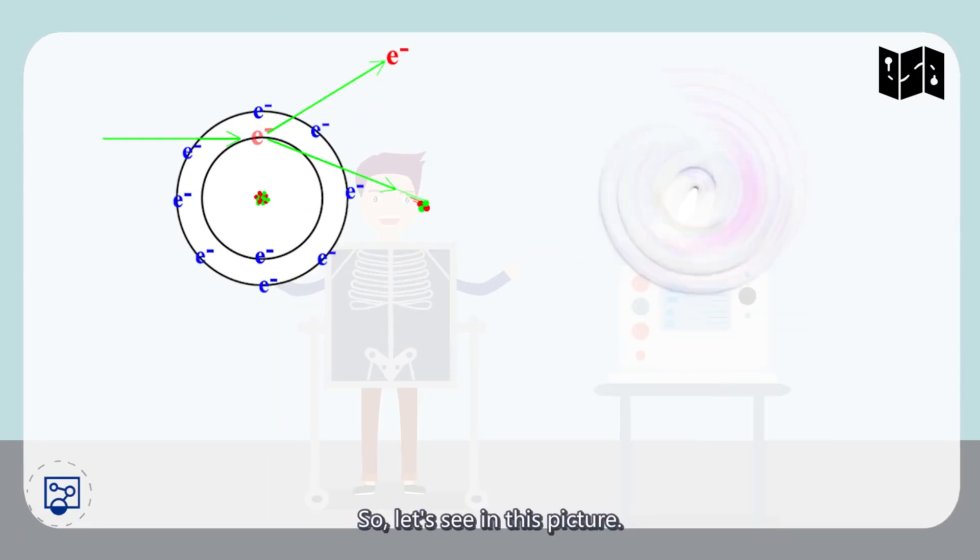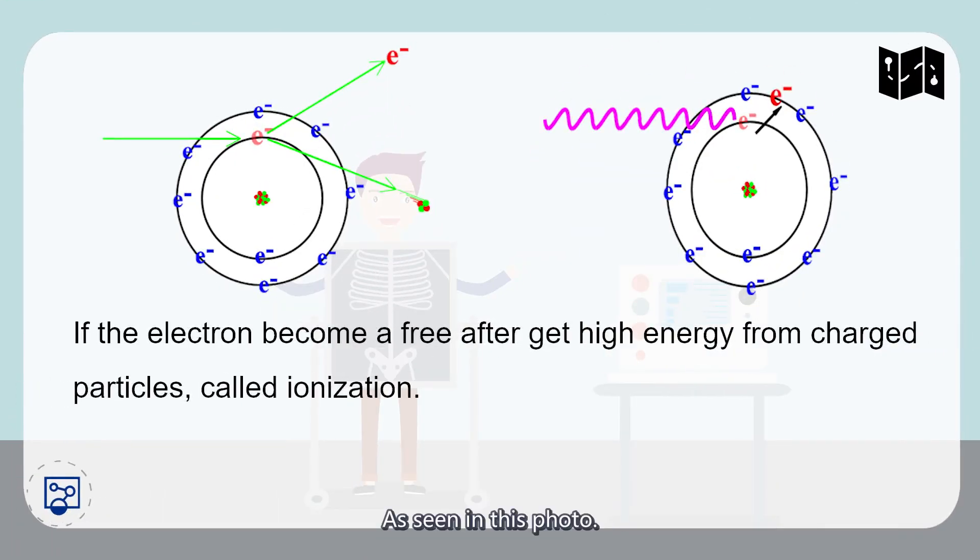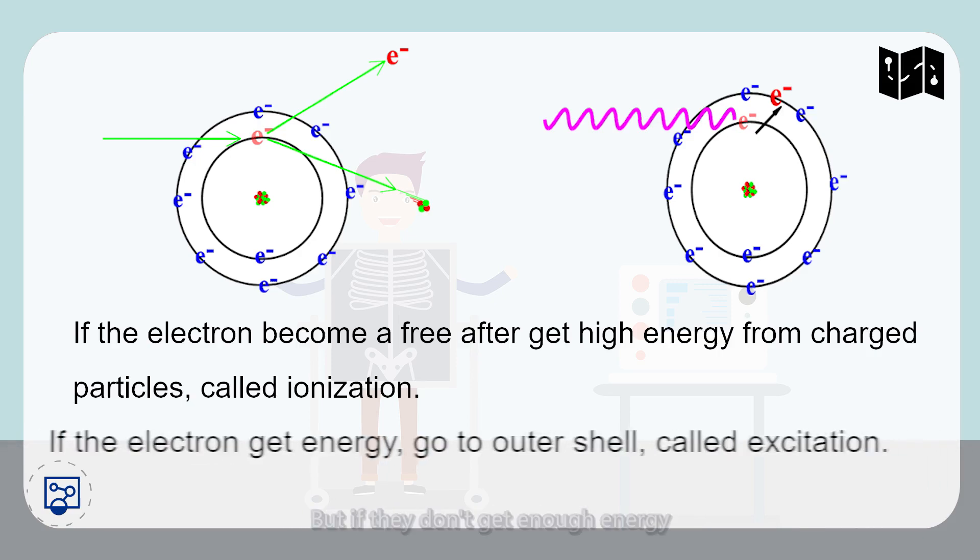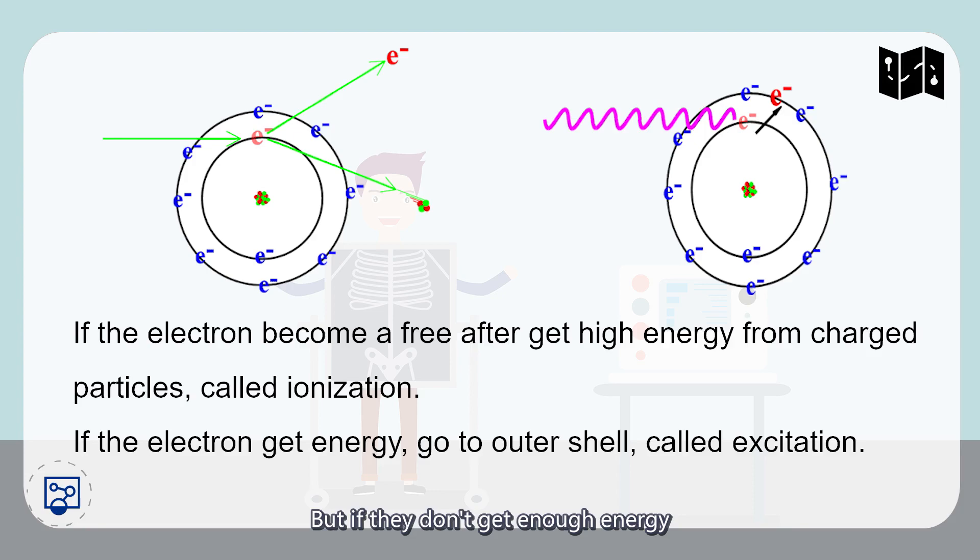So let's see in this picture. As seen in the photo, if the electrons become free after getting high energy from the charged particles, we call this process ionization.